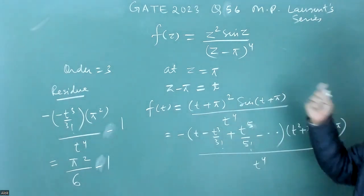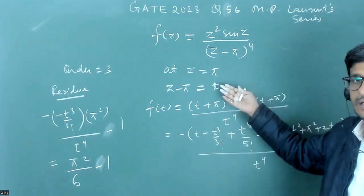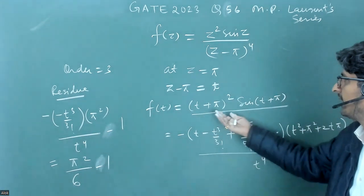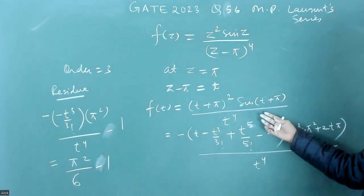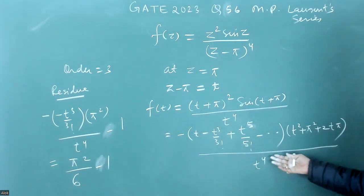For simplicity, write z minus pi equals t, so that you can immediately open this and write a Laurent series like this.